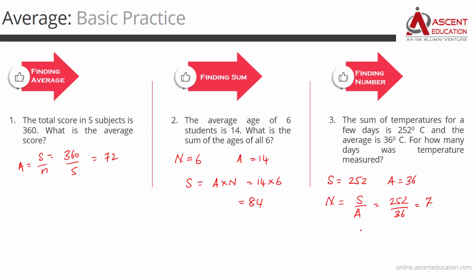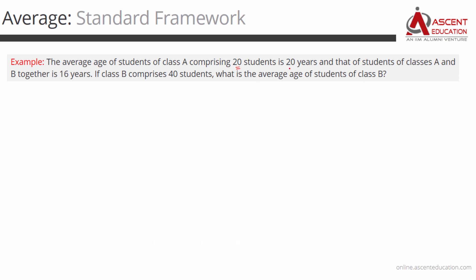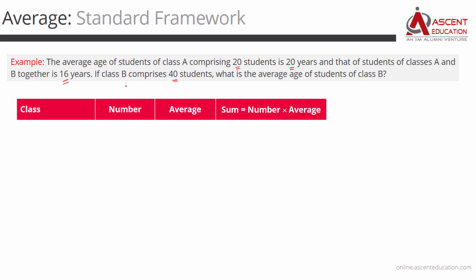So this is the basic idea. In the first case we found the average, in the second we found the sum, and in the third we found the number of days. Now I'll introduce a standard framework. The framework has three columns: Number, Average, and Sum — where Sum equals Number times Average. We'll apply this for Class A, Class B, and Classes A and B together.